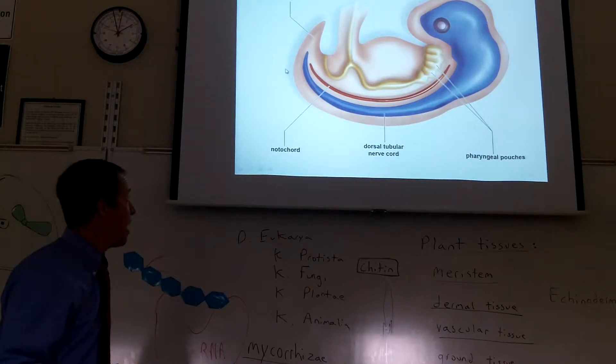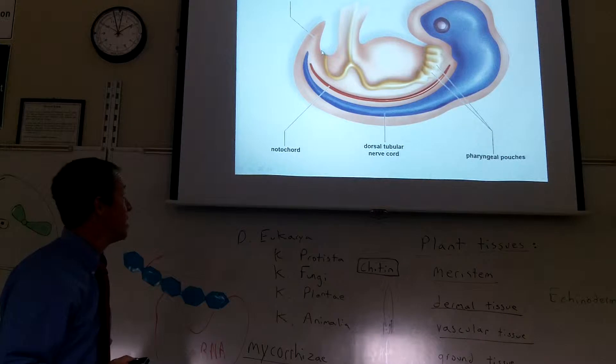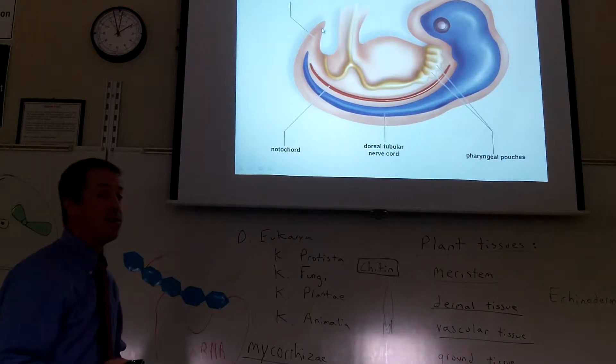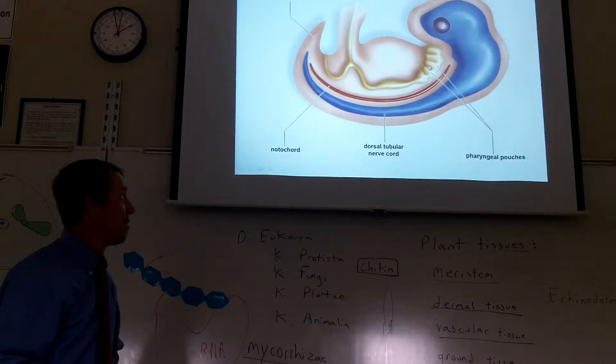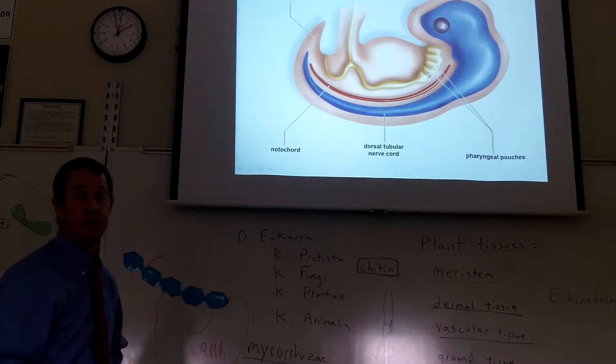So chordates all have these things. They have a tail, and you might say I don't have a tail, but you did when you were an embryo. They have pharyngeal pouches, also known as gill slits. And you say I don't have gill slits, but you did when you were an embryo.